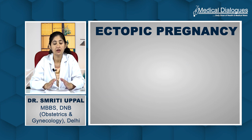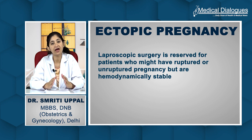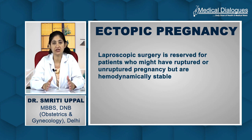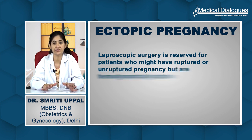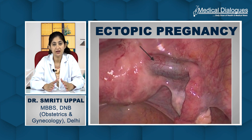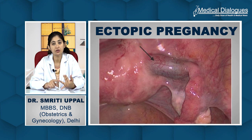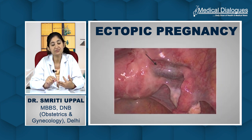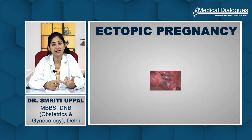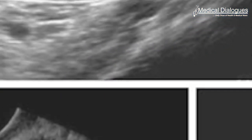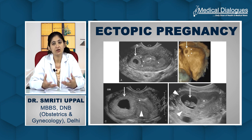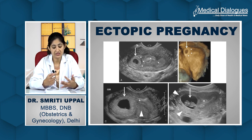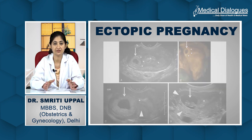Laparoscopic surgery is also an option, reserved for patients who have a ruptured or unruptured pregnancy but are hemodynamically stable, because laparoscopic surgery takes more time than open surgery. Whenever you diagnose an ectopic pregnancy, always arrange for blood — even if the patient is undergoing medical management with methotrexate, follow up closely, because sometimes the pregnancy may keep growing despite methotrexate. The patient might end up in a tubal abortion if not a tubal rupture, which is equally damaging due to bleeding in the abdominal cavity, causing peritonitis and distress that must be immediately relieved.